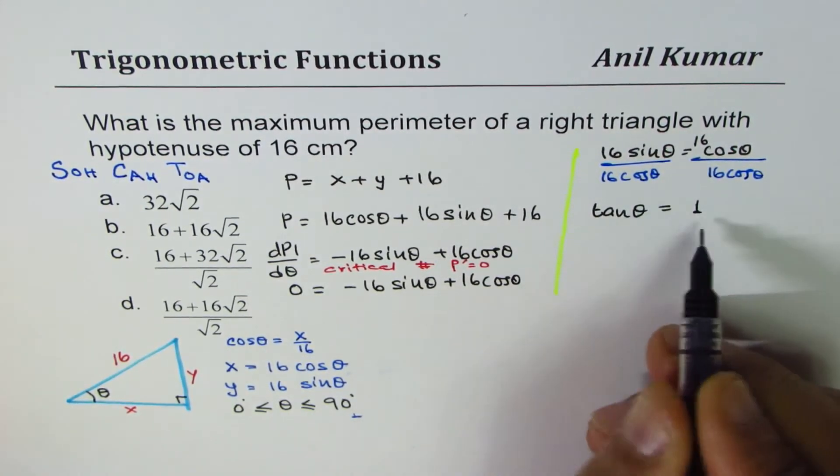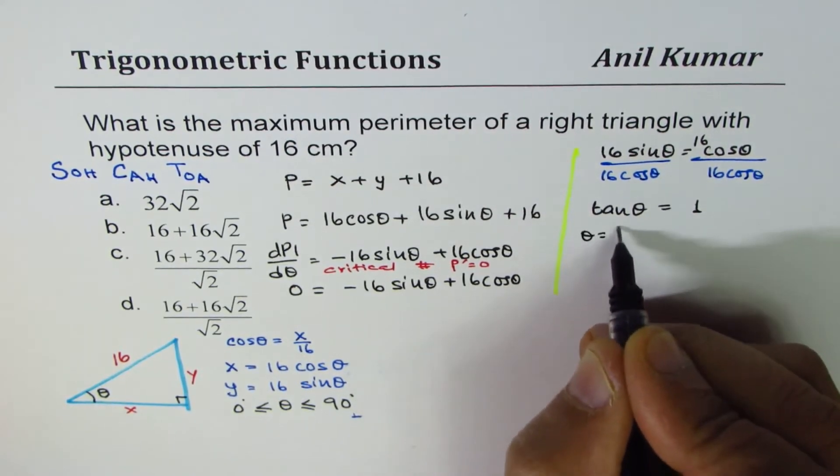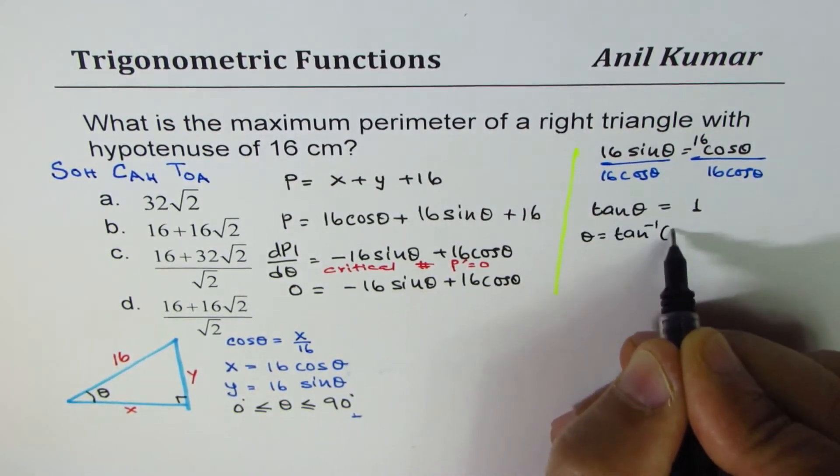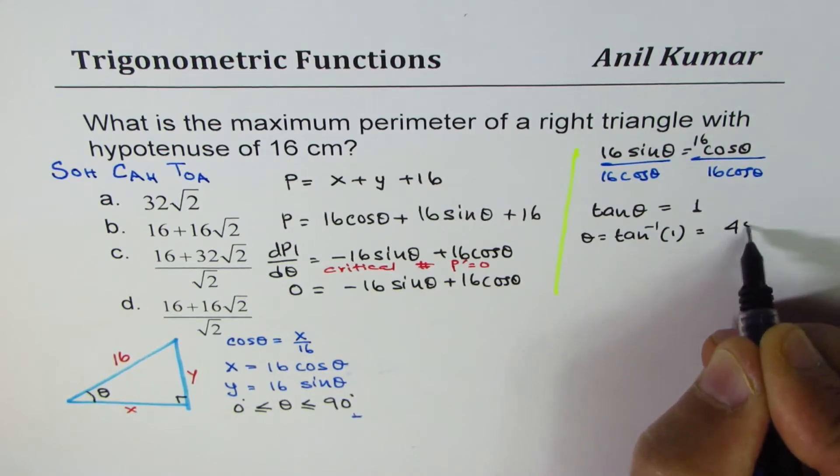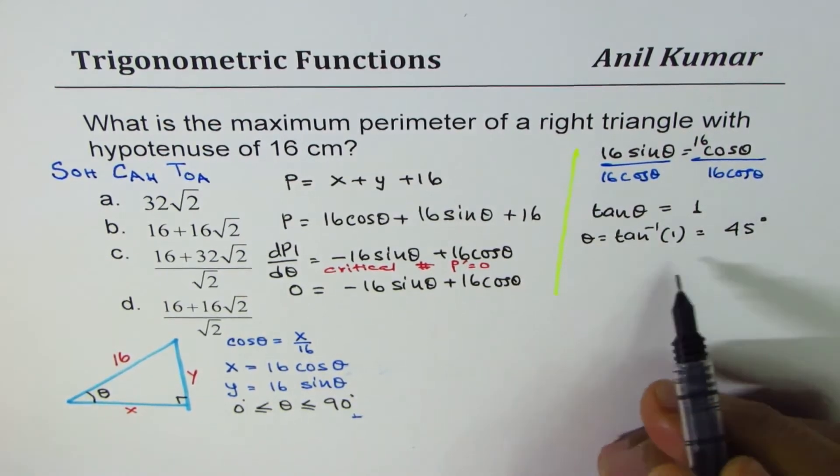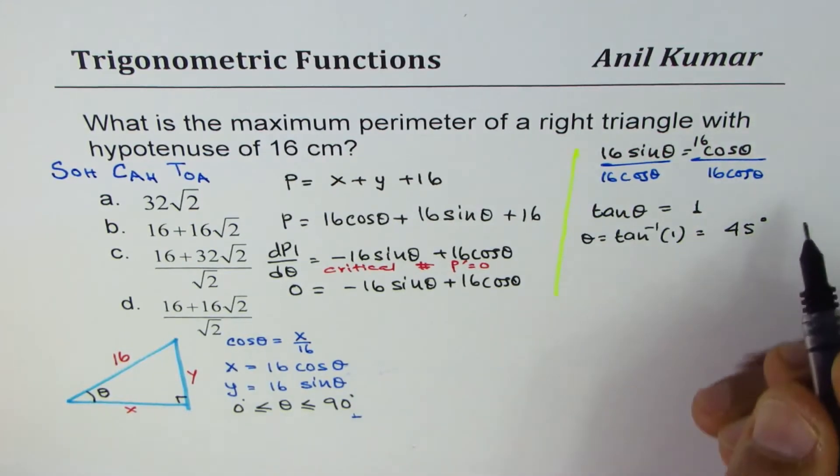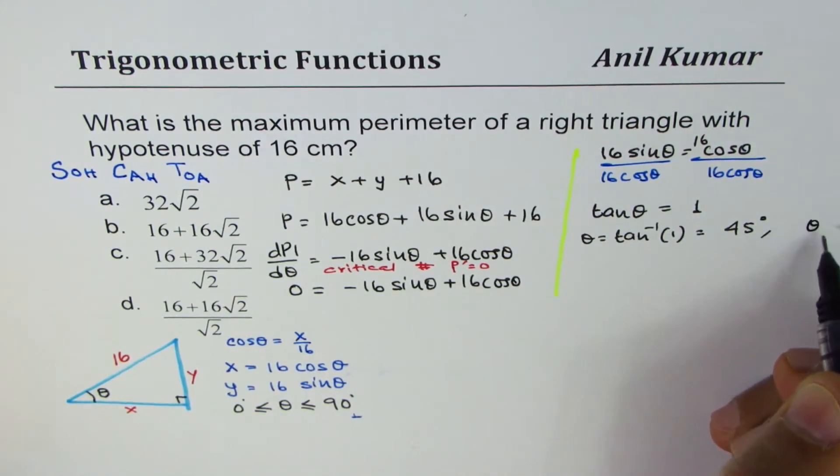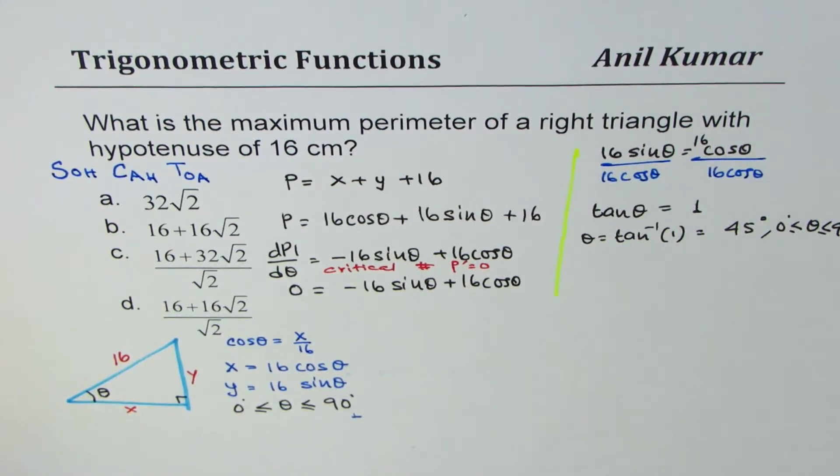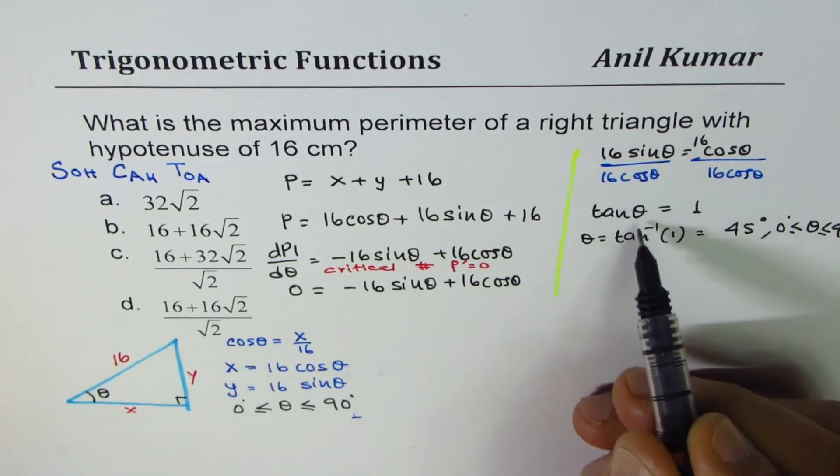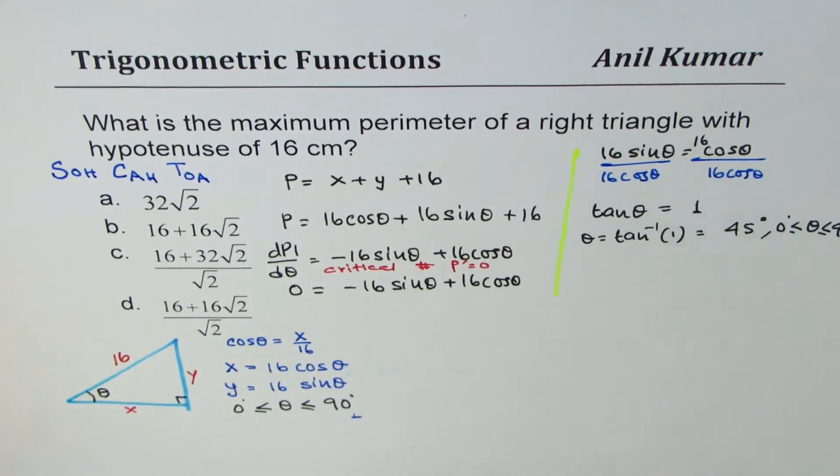Tan theta is 1 for 45 degrees, or you can say theta equals tan inverse of 1, which is 45 degrees, when theta is between 0 to 90 degrees. The other quadrant, of course, tan is positive in third quadrant, so we are not considering that.